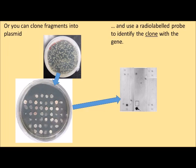You could clone all of those fragments, or you could cut out the region of the gel and clone specifically those fragments into plasmids. We can then screen those plasmids using a radio-labeled probe, and we will end up identifying a plasmid that contains the gene fragment of interest. We would normally do this if we wanted to identify a DNA sequence that we don't fully know the details of.